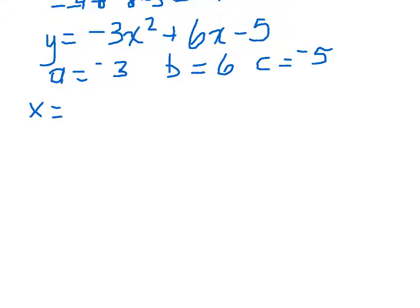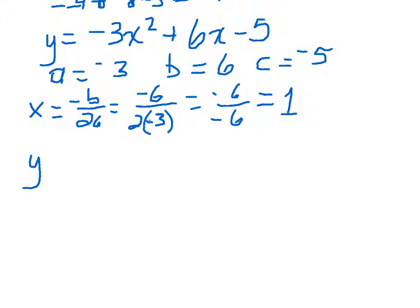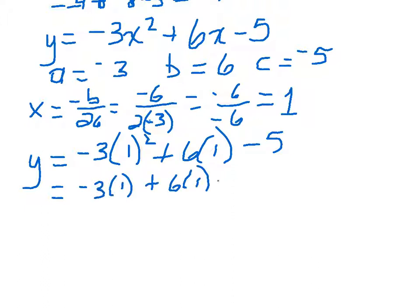To get the x value, it's the opposite of b over 2a. So the opposite of 6 is negative 6 divided by 2 times negative 3, negative 6 over negative 6. Hey, we get a positive 1. To get our y value, we just plug in a positive 1 wherever we see it. Squared plus 6 times 1. Follow the order of operations. 1 squared is 1. Now we need to do some multiplication. Negative 3 times 1 is negative 3. 6 times 1 is 6. Negative 3 plus 6 is going to be positive 3. Positive 3 minus 5 gives us negative 2. So our vertex happens at 1, negative 2.